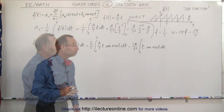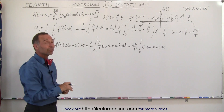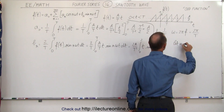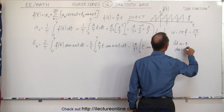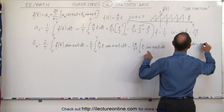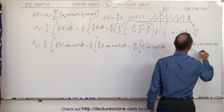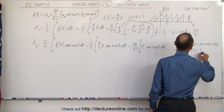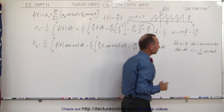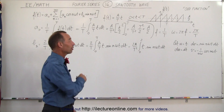This integral can only be evaluated using integration by parts. Let u = t, so du = dt; and let dv = sin(nωt) dt, so v = −(1/nω)·cos(nωt). This is because the derivative of sine is positive cosine, so the integral of sine is negative cosine.